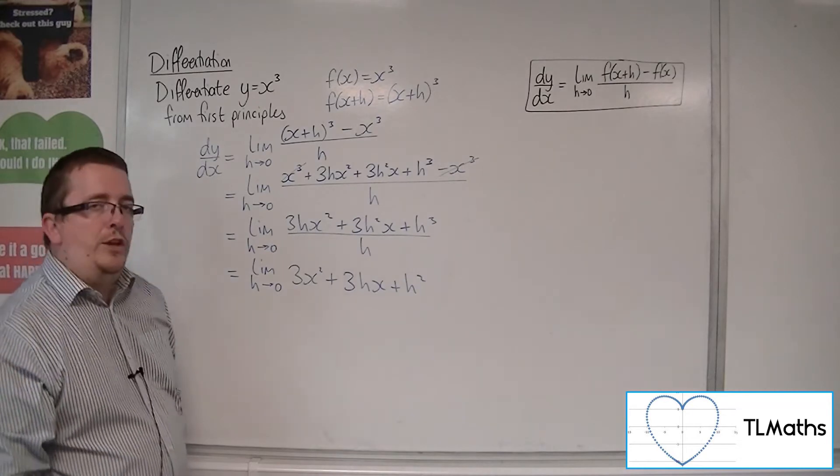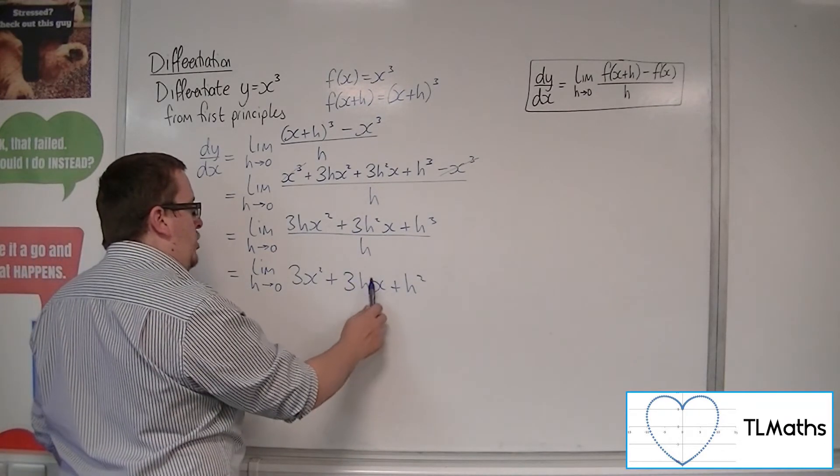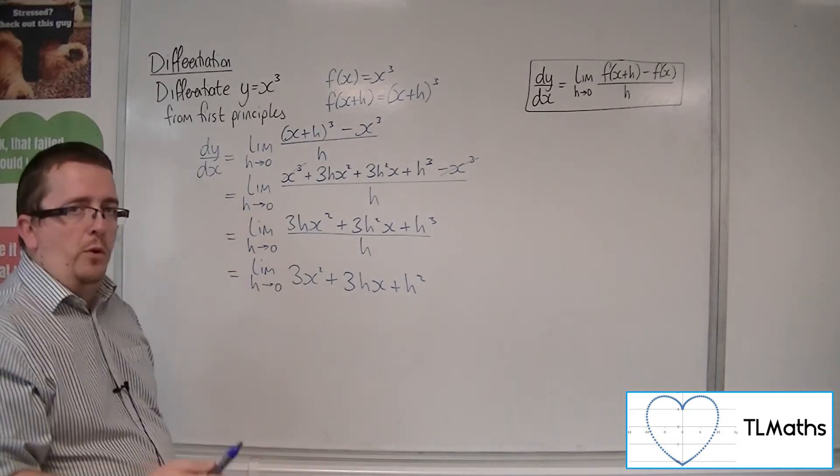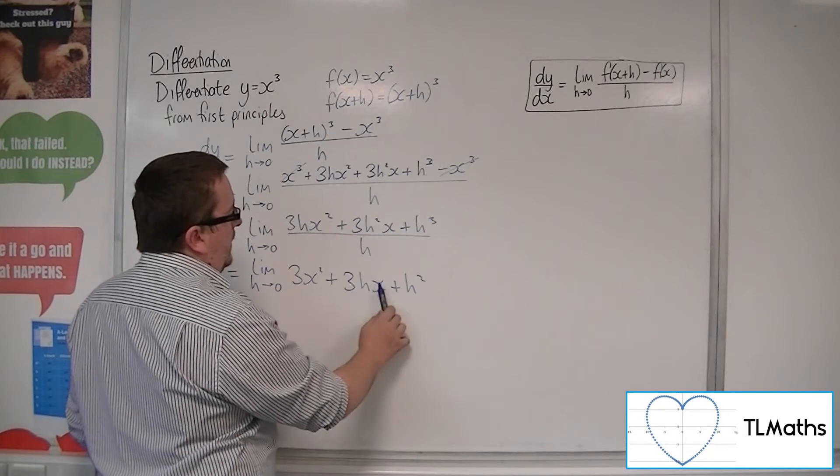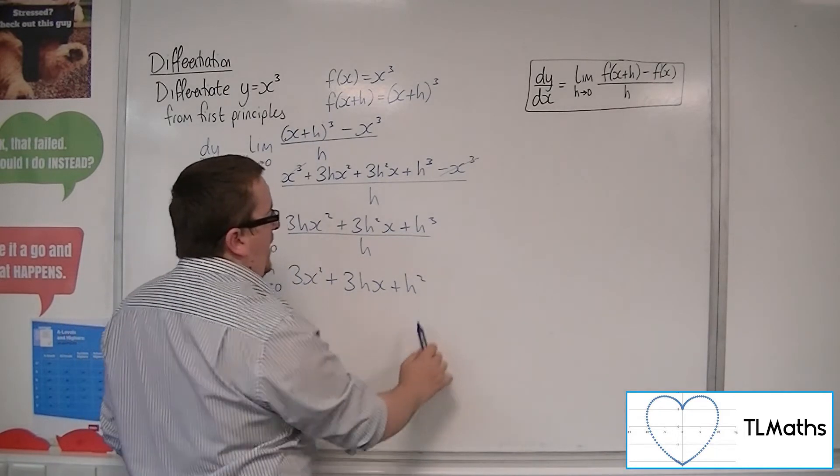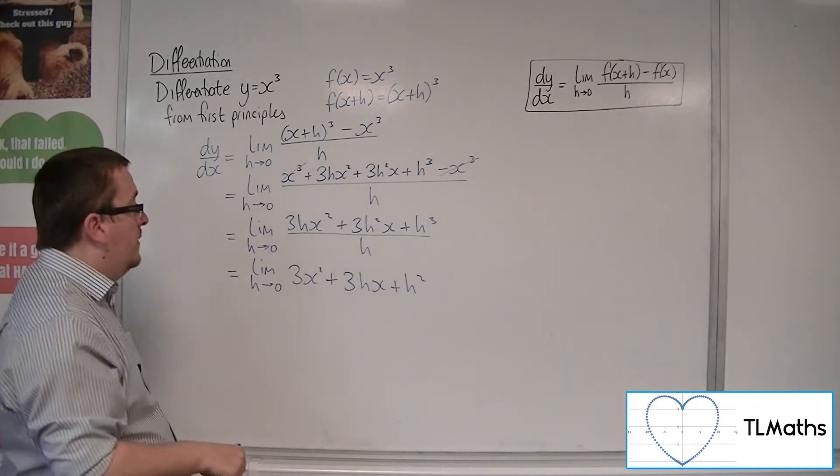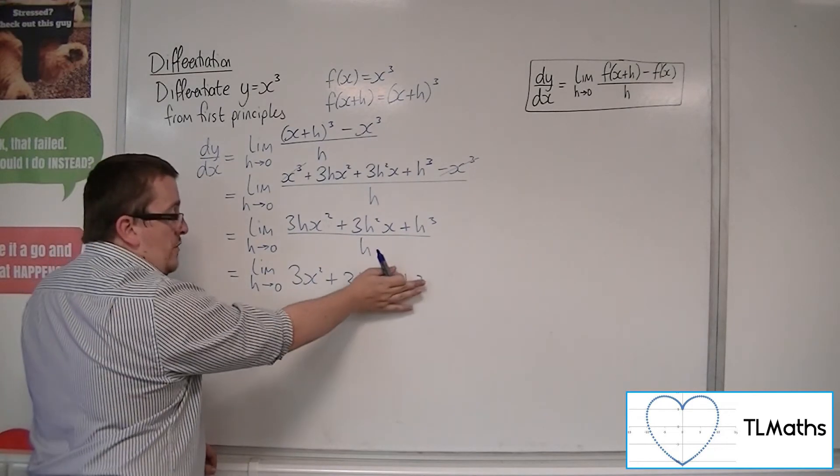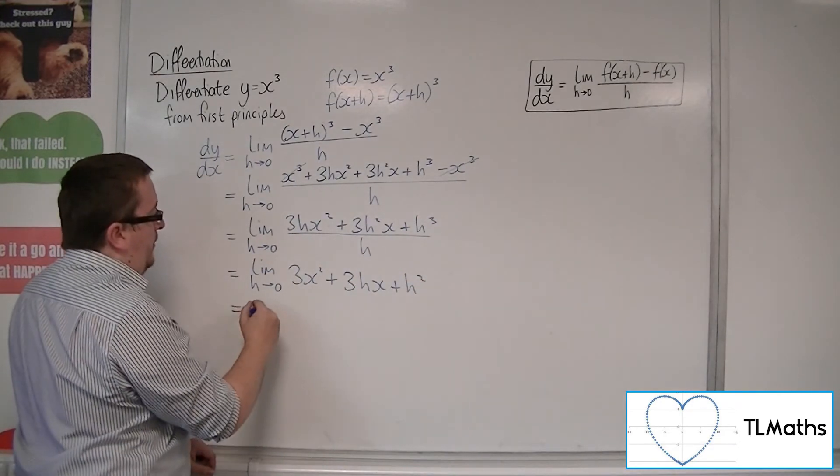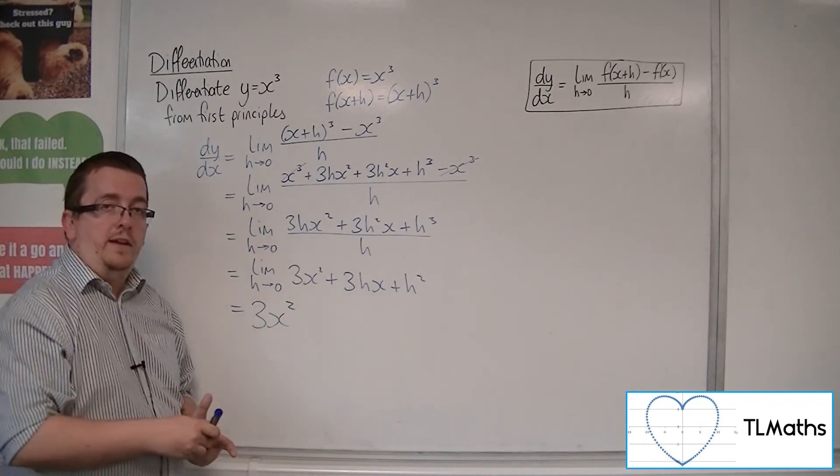Now as h tends to 0, this h will get smaller and smaller. And so this term will tend to 0 as well. And this term will definitely tend to 0 even faster, because h². So both of those two terms tend to 0, leaving us with the 3x² as we expected.